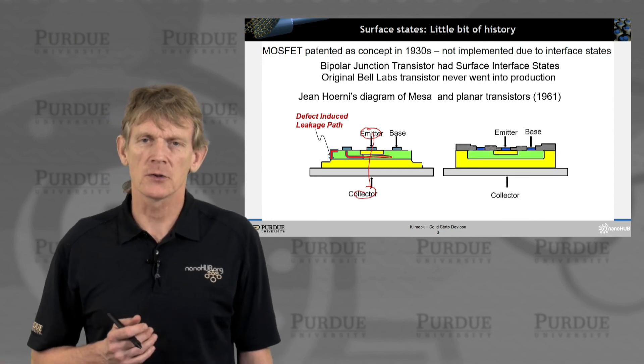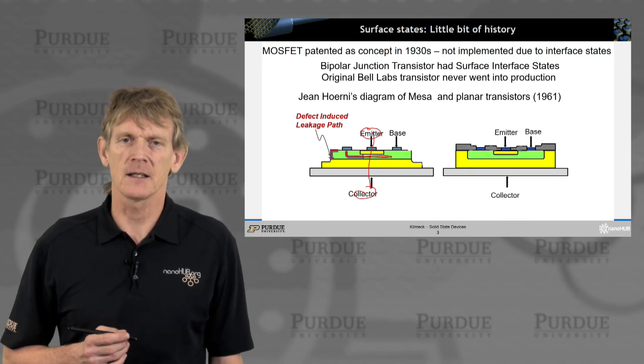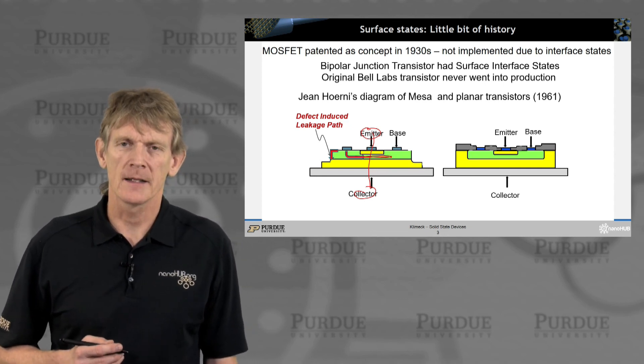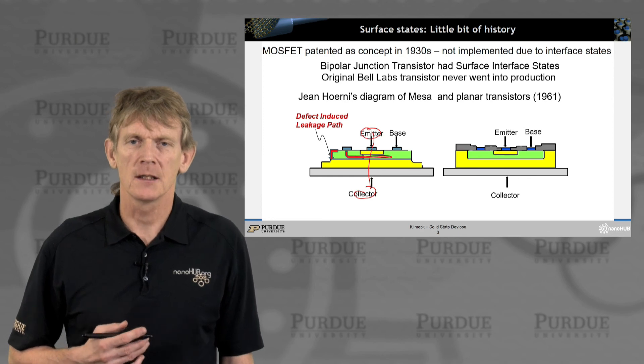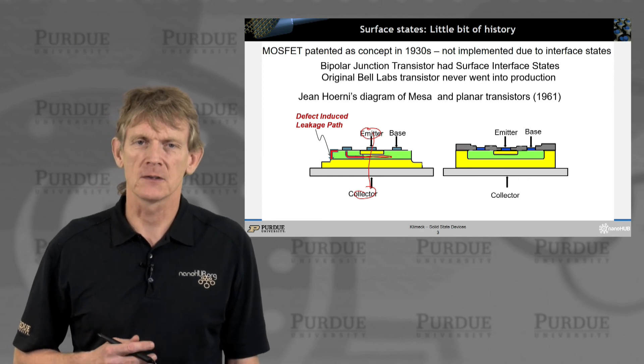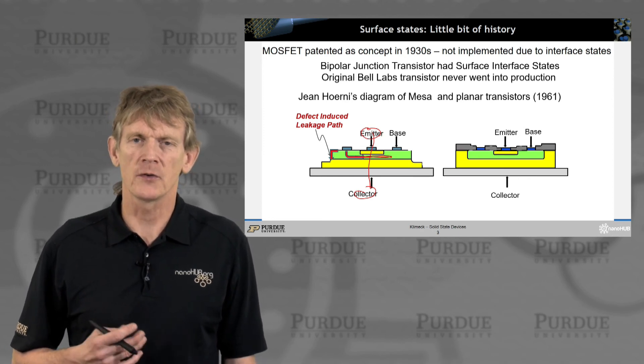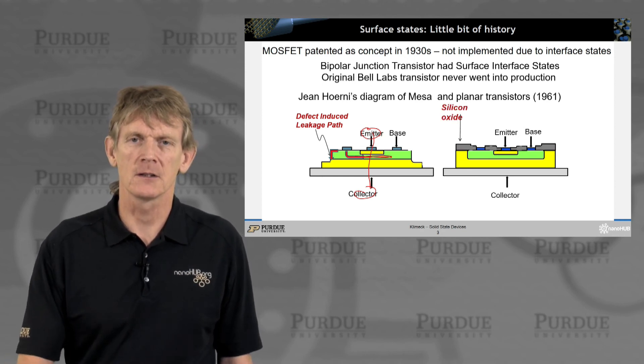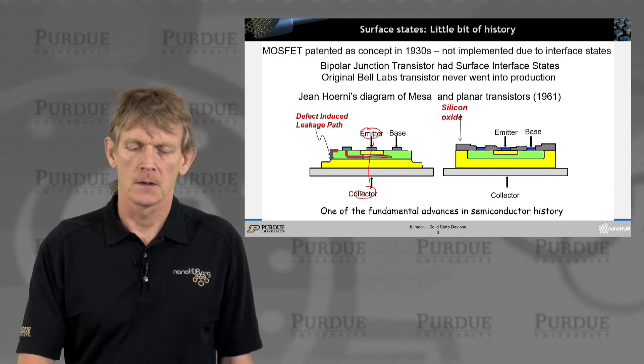That was a detrimental effect to the overall device performance. The innovation was to cover all of this in silicon dioxide and close it and make planar transistors. That was a major breakthrough in the mass production of transistors in the 1960s. Overcoming interface issues has actually become really important for these semiconductor devices.